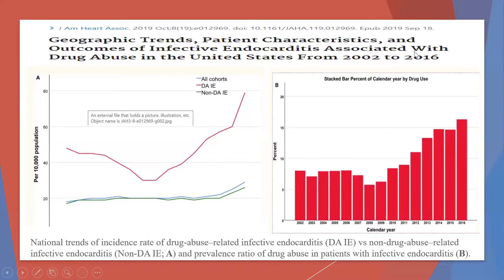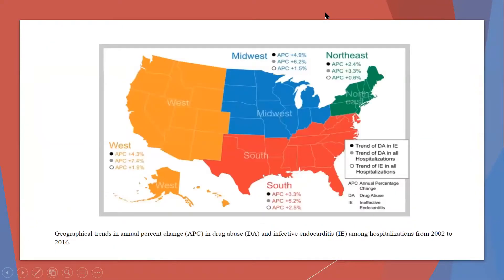Looking at the graphic from 2002 to 2016, we see a definite increase in infectious endocarditis cases. Comparing patients who are drug abusers — the red line — versus patients who are not, the trend is significantly higher among drug abusers. A US map also shows the trend of IE hospitalizations in drug abusers: the highest percentage is in the west, up to 4.3% prevalence and 7.4% hospitalization rate, but rates are elevated throughout the country.